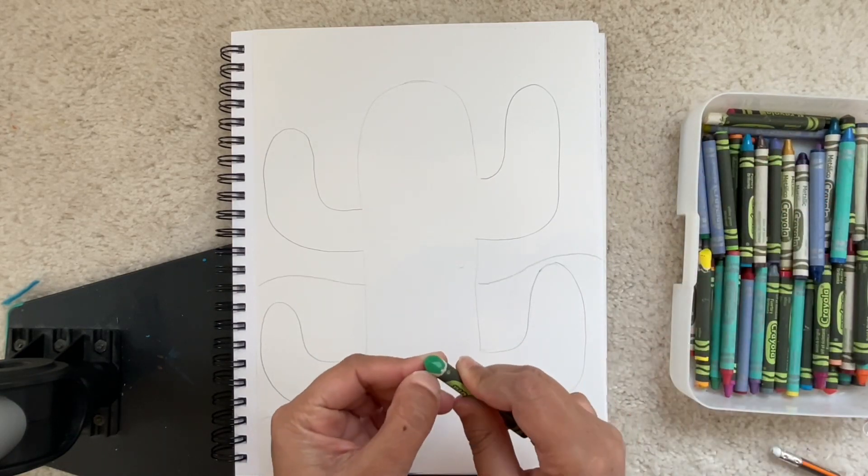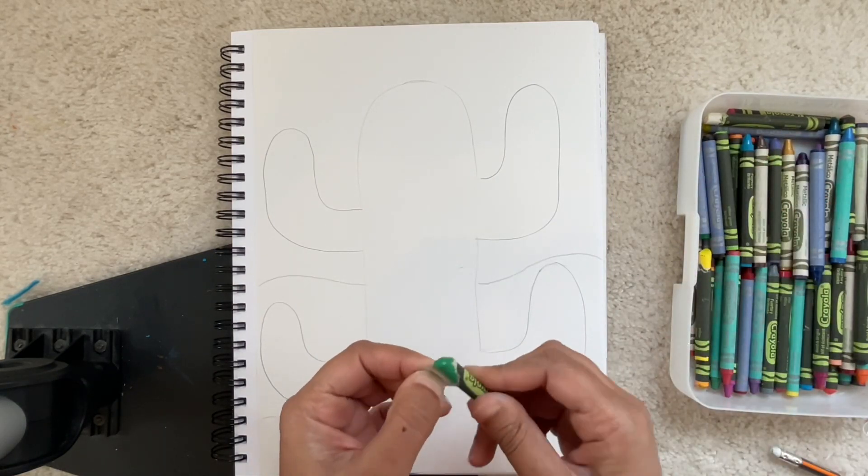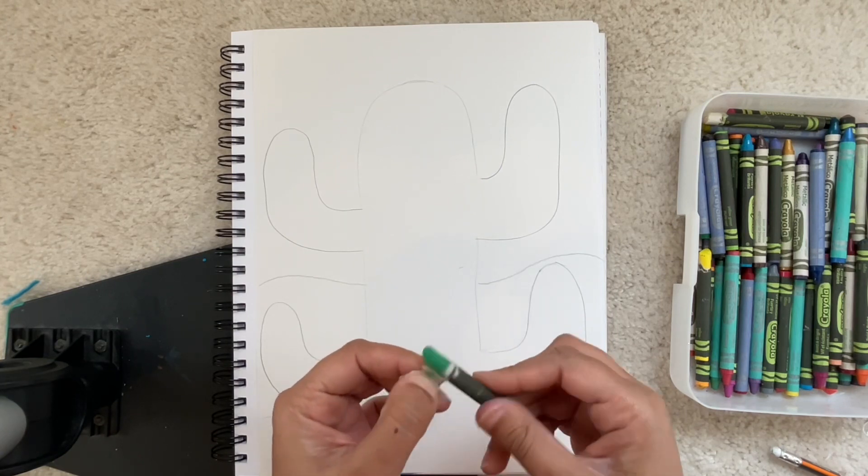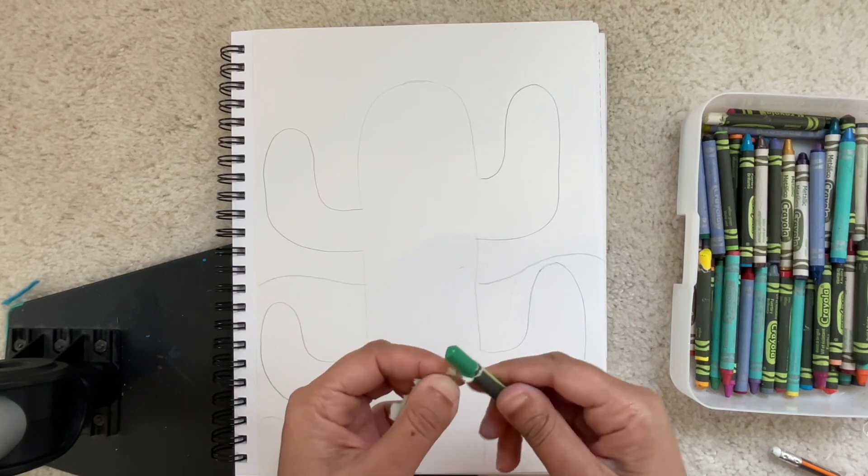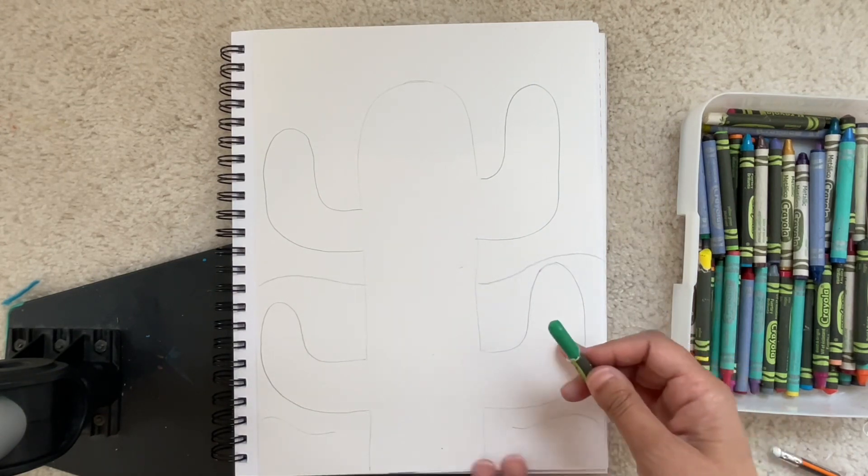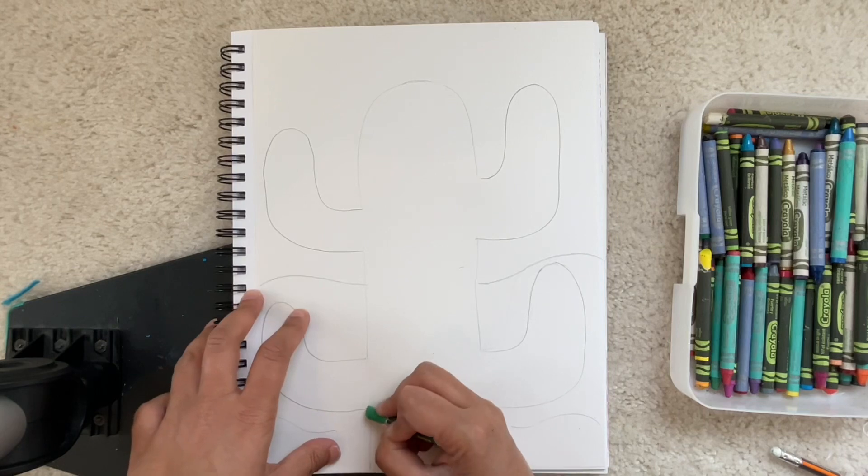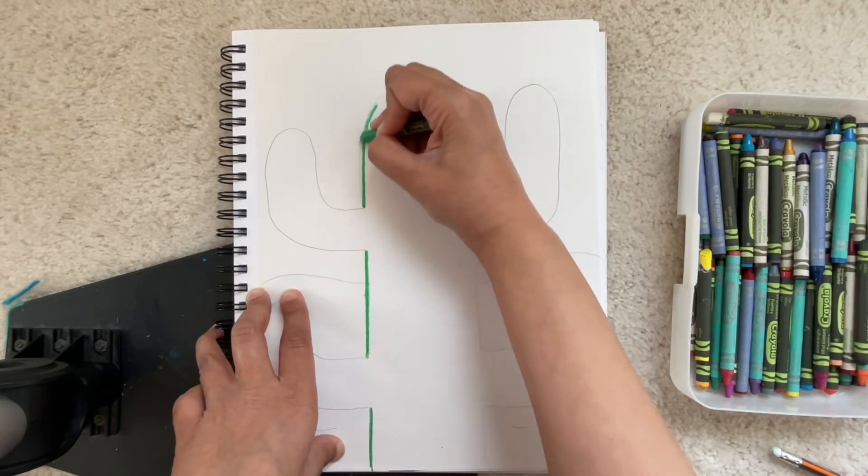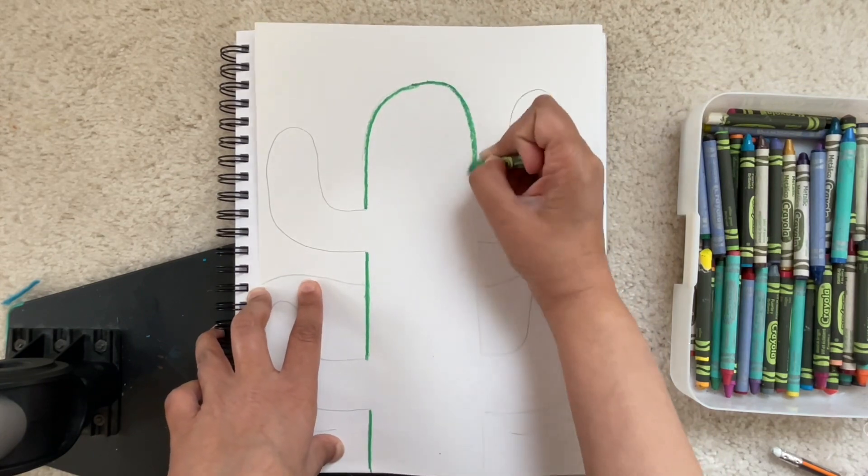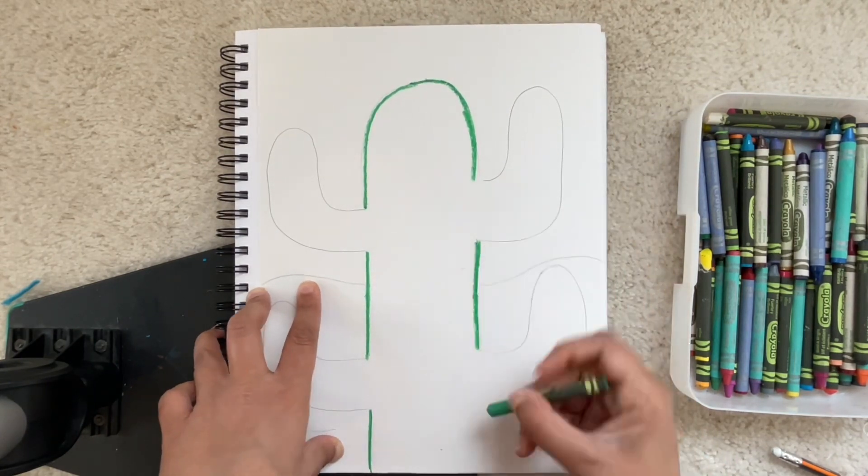And then what I explained in the video is you want to outline your cactus in green crayon, nice and dark. Now you'll be going back to your seat in a minute and getting the crayon box. But just like I explained before, you will be outlining your cactus, nice and dark with a green.